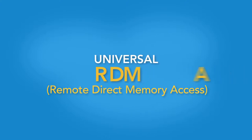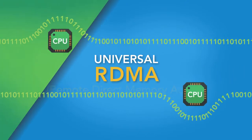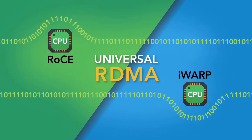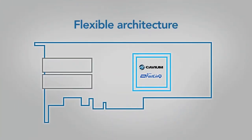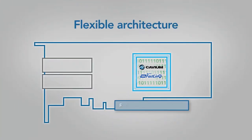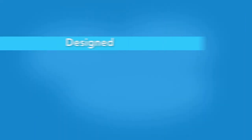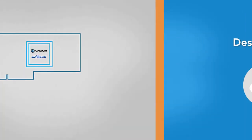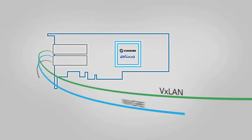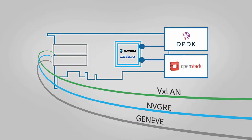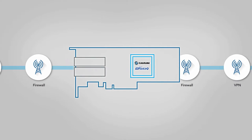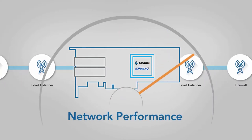Universal RDMA lets you select the appropriate protocol for the workload. Flexible architecture means quick adaption to new technologies. Cloud and telco deployments benefit from accelerated tunneling and integration with DPDK and OpenStack. Telco NFV workloads perform to maximum potential.